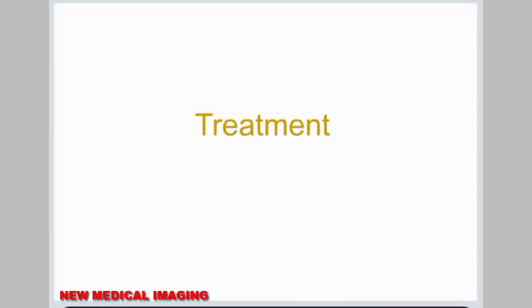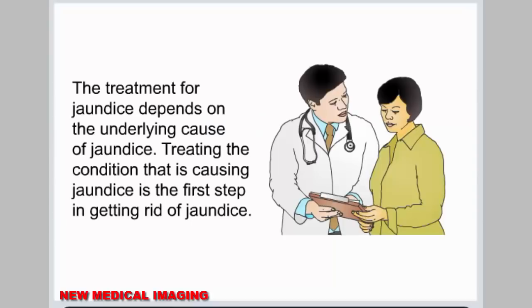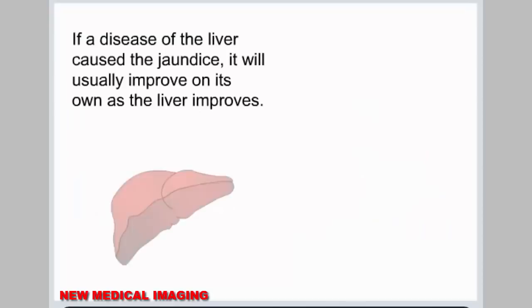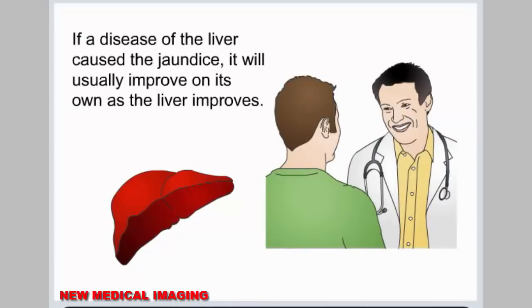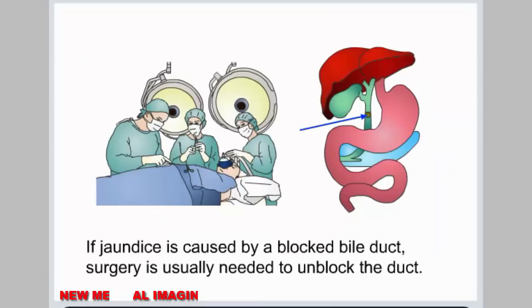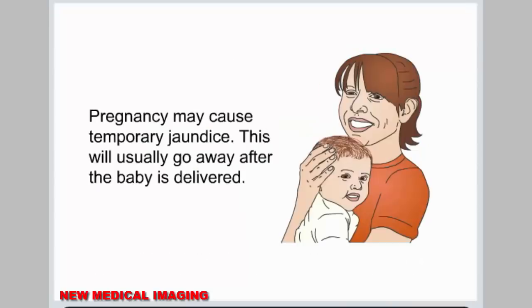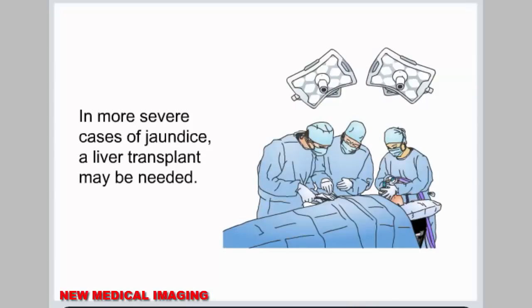Treatment. The treatment for jaundice depends on the underlying cause. Treating the condition that is causing jaundice is the first step in getting rid of it. If a disease of the liver caused the jaundice, it will usually improve on its own as the liver improves. If jaundice is caused by a blocked bile duct, surgery is usually needed to unblock the duct. Pregnancy may cause temporary jaundice, which will usually go away after the baby is delivered. In more severe cases of jaundice, a liver transplant may be needed.